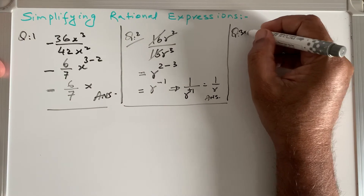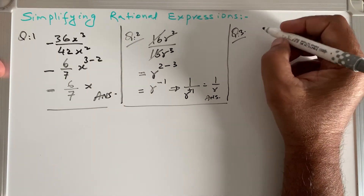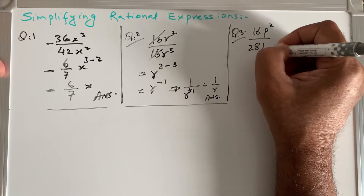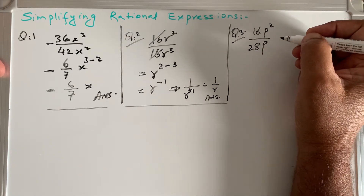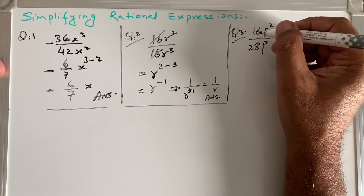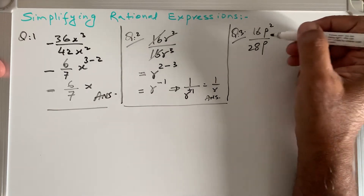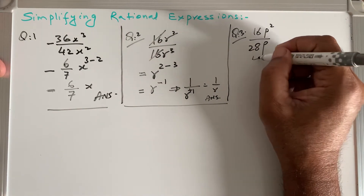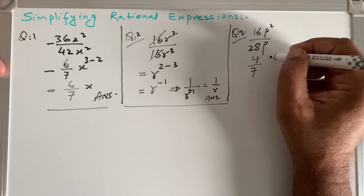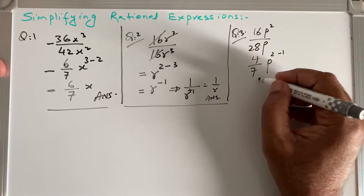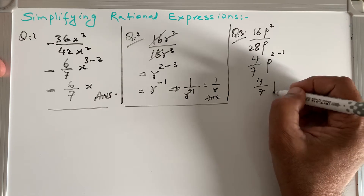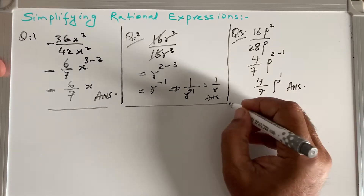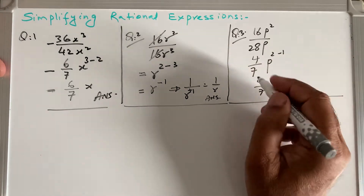Question 3: 16p² / 28p. We find the common factor of 16 and 28 — four 4s are 16 and four 7s are 28. For the exponent: p^(2-1) = p¹, which we don't write. So the answer is 4p/7.